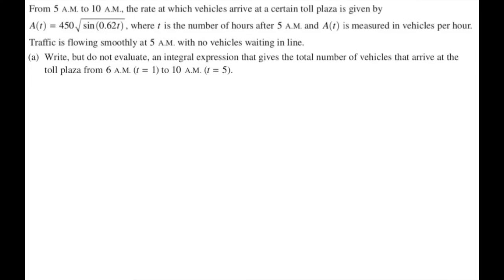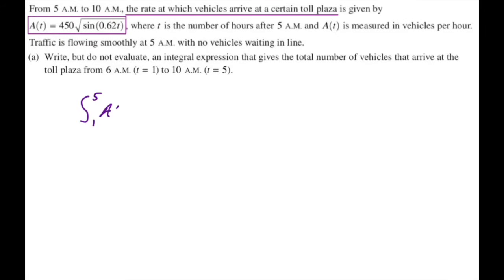For part A, we want to write, but do not evaluate — that's really interesting — an integral expression that gives the total number of vehicles that arrive at the toll plaza between T equals 1 and T equals 5. The total number of vehicles would be an integral of the rate at which they're arriving, which is A of T. So all we really want to do is write the integral from 1 to 5 of A of T dt. We don't need to write out 450 root sine of 0.62T. That's literally all we needed to do.